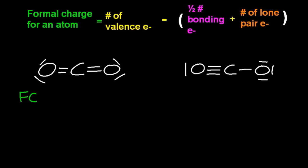So for oxygen, six valence electrons minus half the number of bonding electrons, that's half of four plus the number of electrons in the lone pairs, which is four. That gives me zero. Zero's good. It's looking good for the structure on the left.